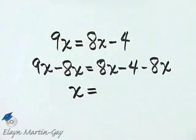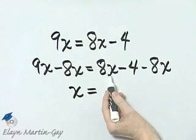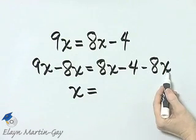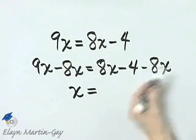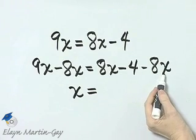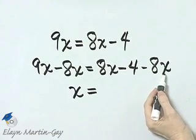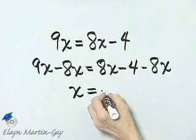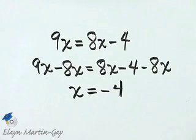And what happens on the right side? This is the reason I subtracted 8x from both sides, because I knew 8x minus 8x, and remember, I can rearrange these terms. 8x minus 8x is 0x, or simply 0, so I have negative 4.